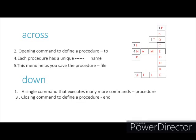Number 4 across: each procedure has a unique blank. The answer is NAME — spell it N-A-M-E, write it across. Number 5 across: this menu helps you save the procedure. The answer is FILE — spell it F-I-L-E, write it across.